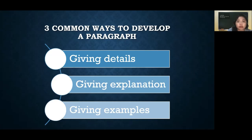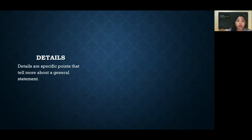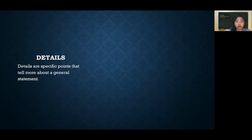Let me explain each one. First, 'details' means the specific points that tell more about a general statement. In a paragraph, you develop it by making supporting sentences that consist of specific details, giving more precise information about the topic sentence.